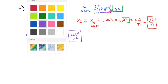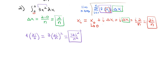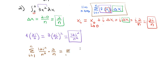Now let's calculate the full sum. The sum from i=1 to n of f(x_i) times delta x is 12i²/n² times 2/n, which gives the sum from i=1 to n of 24i² over n³. Since 24 and n³ are constants, we pull them out: 24 over n³ times the sum of i².